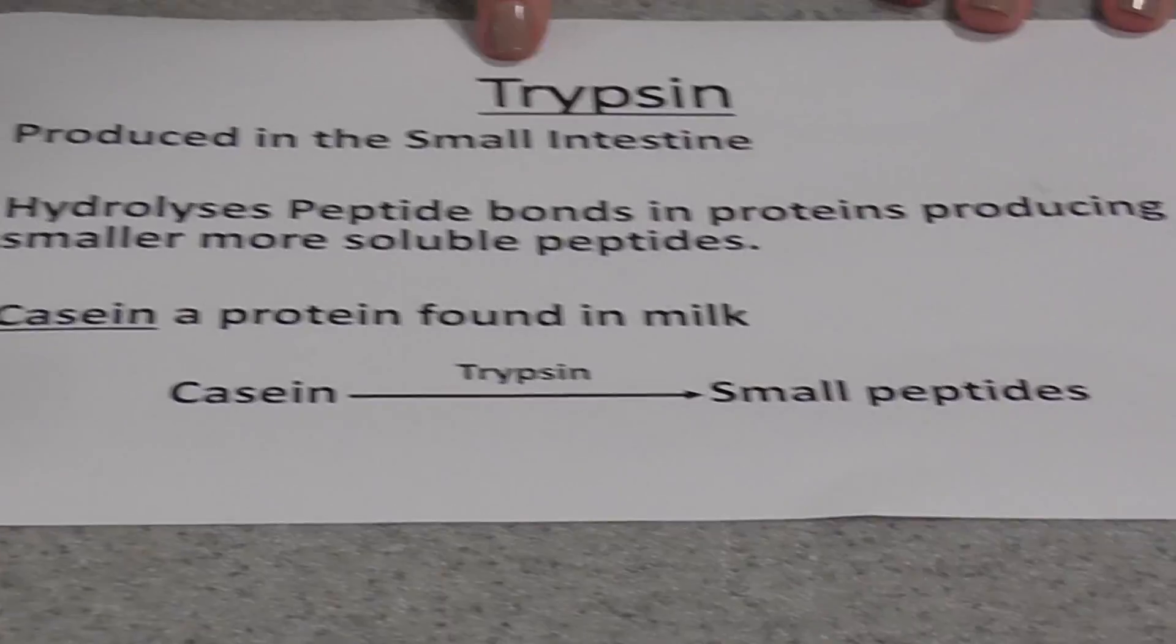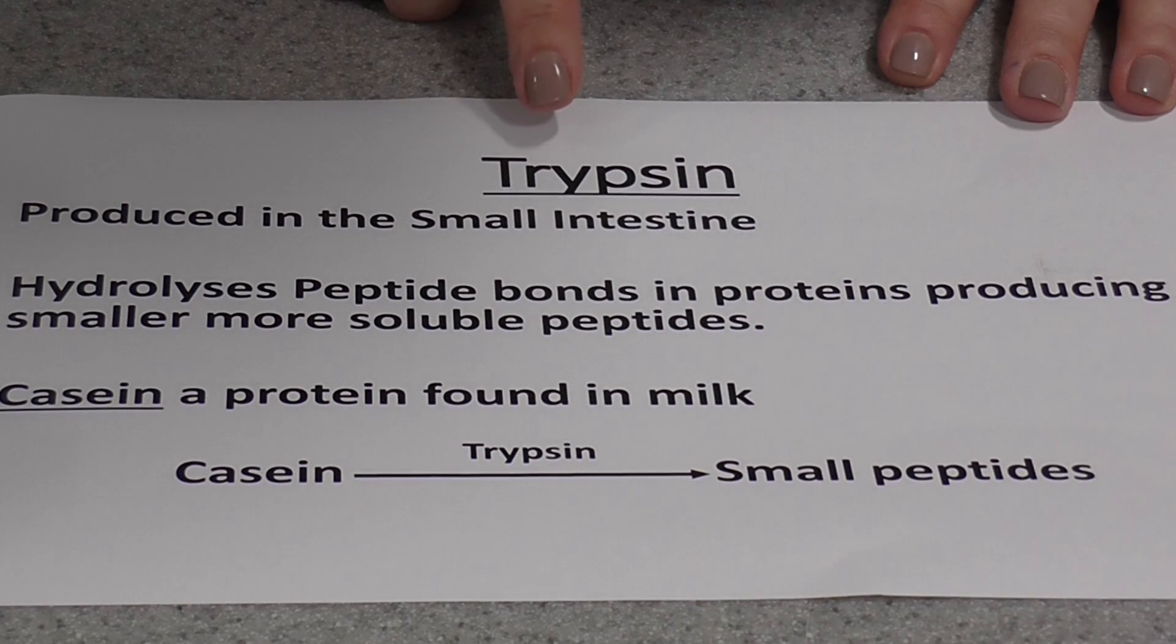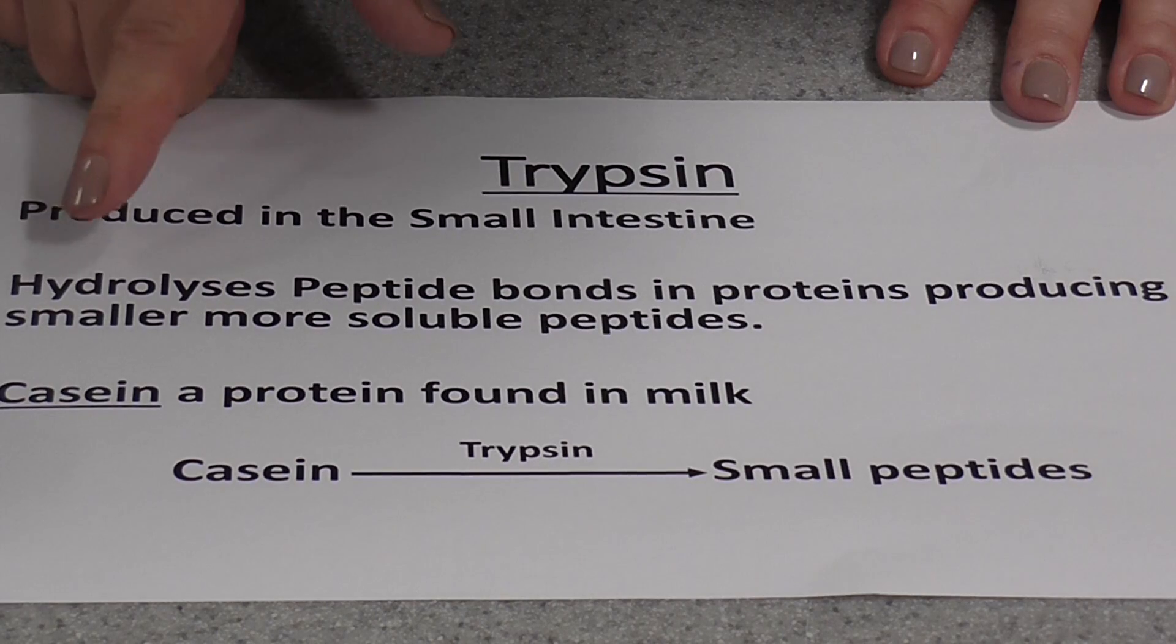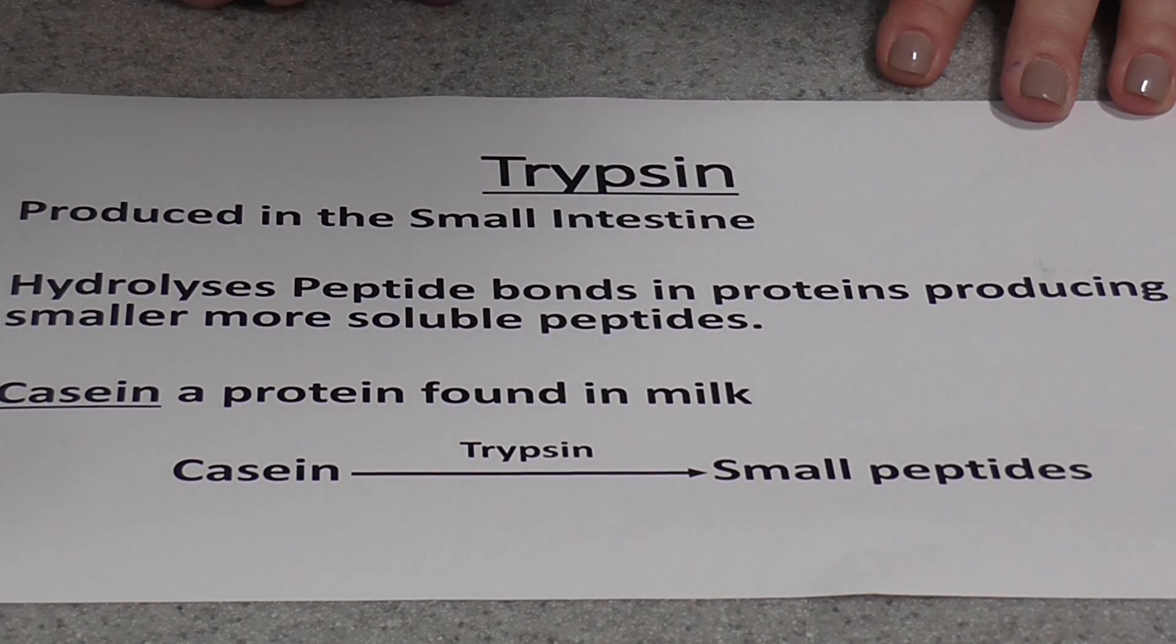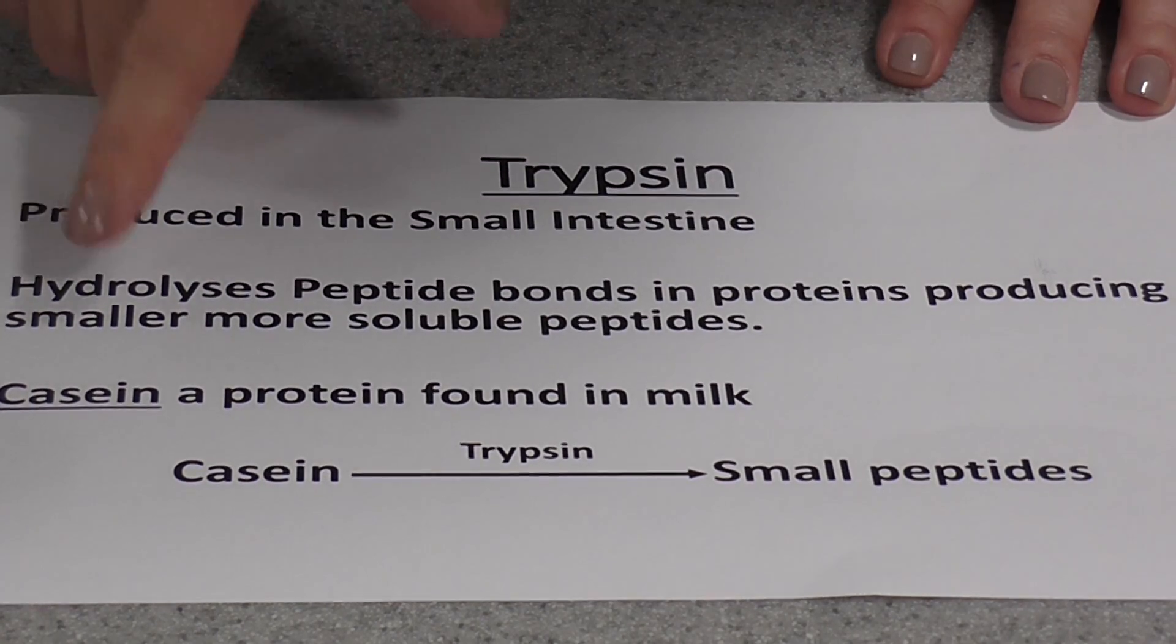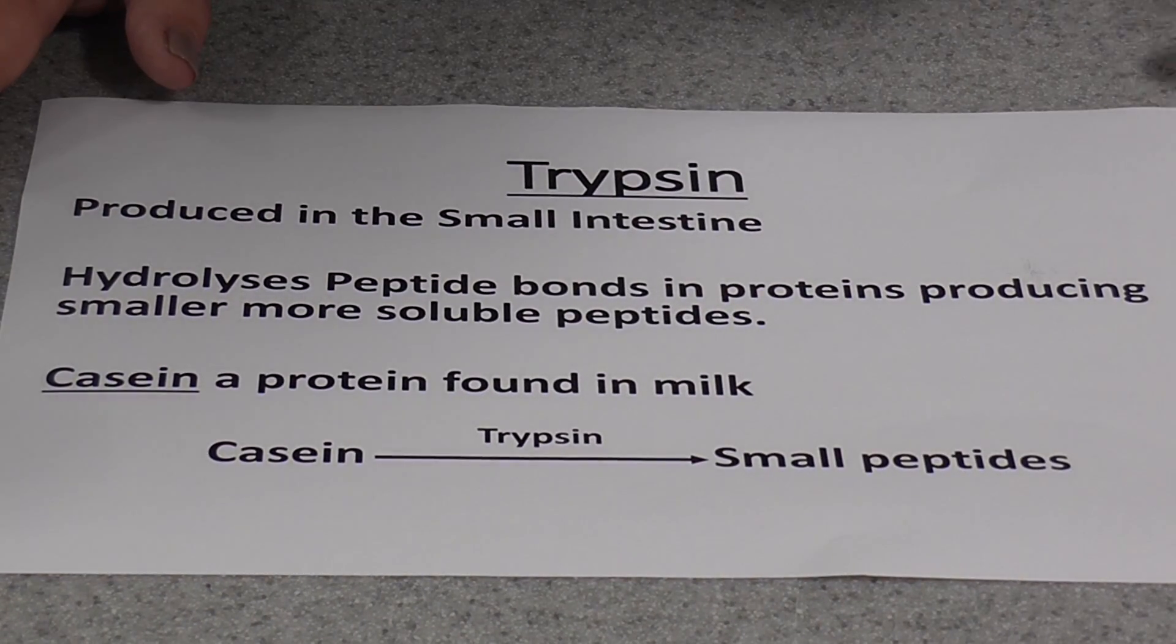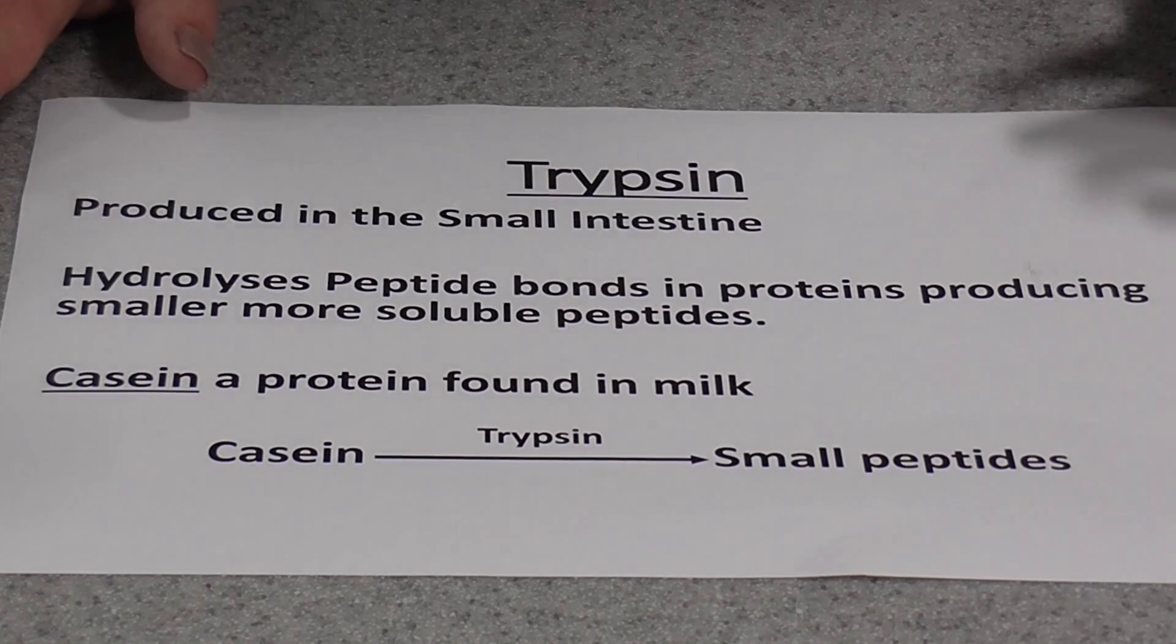The enzyme that we're going to use today is a protease enzyme known as trypsin. It's produced by the small intestine of most mammals, and it's involved in the hydrolysis of peptide bonds in proteins to produce smaller, slightly more soluble peptides, but also it does make the protein in milk coagulate.